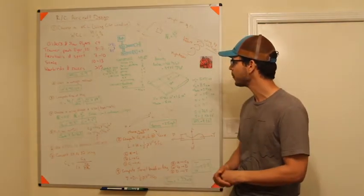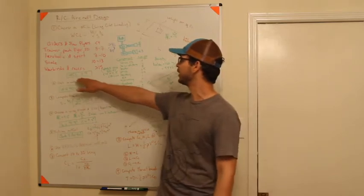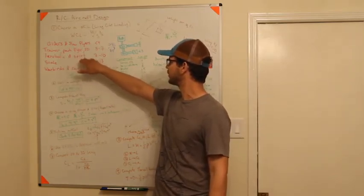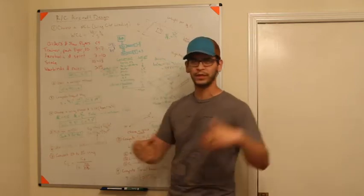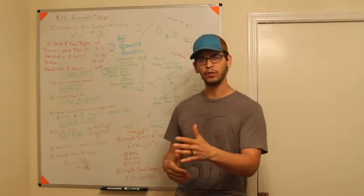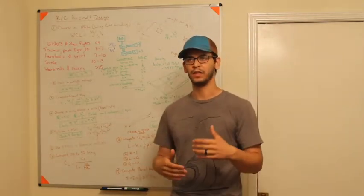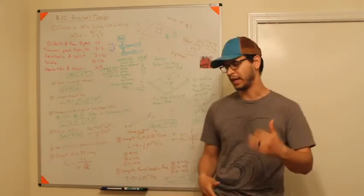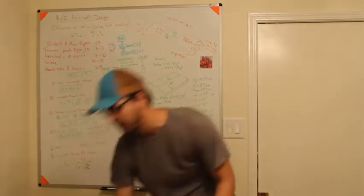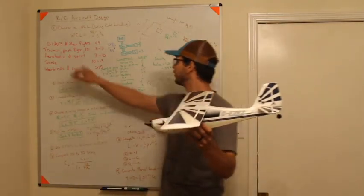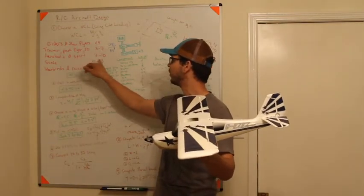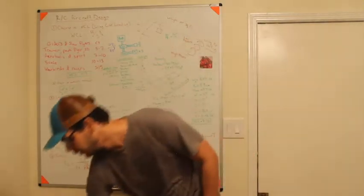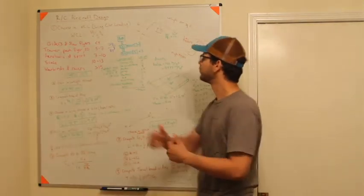For this example I'm going to pick a wing cube loading of nine. That puts it on the tail end of aerobatic/sport, so it'll still be nimble and maneuverable but also pretty fast. I wanted something faster than a trainer — trainers are in the five-to-seven range — but operating in roughly the same way, so I picked a wing cube loading of nine.